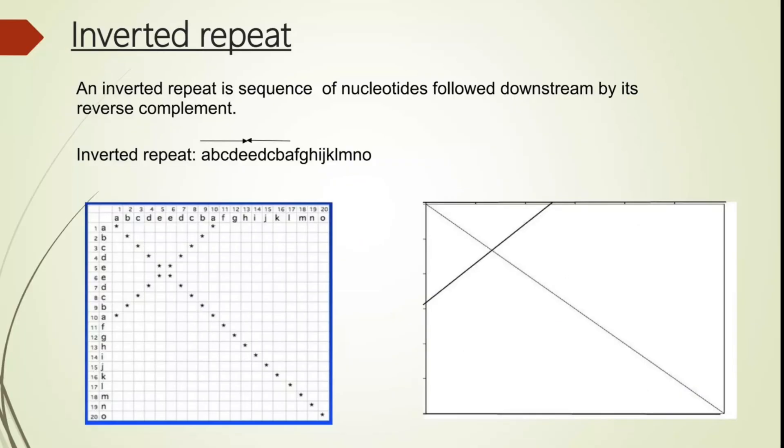Now let's take a look at another example of the dot plot with inverted repeat. But this time, as you see, we have four dots here. And this is because we have here two E's and two E here, which make this box. So we have here palindromic sequence, inverted repeat. But as I said, we have here low complexity region, which makes this box.